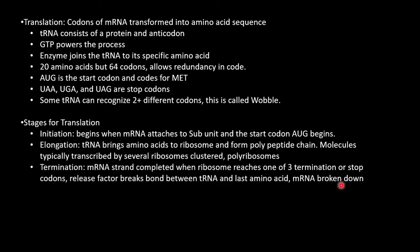The stages for translation are: initiation, it begins when mRNA attaches to the subunit and the start codon AUG is coded; elongation, tRNA brings amino acids to the ribosome and forms a polypeptide chain; and finally, termination, where the mRNA strand is completed and the ribosome reaches one of the three termination or stop codons. Release factor breaks bonds between tRNA and the last amino acids. mRNA is broken down.